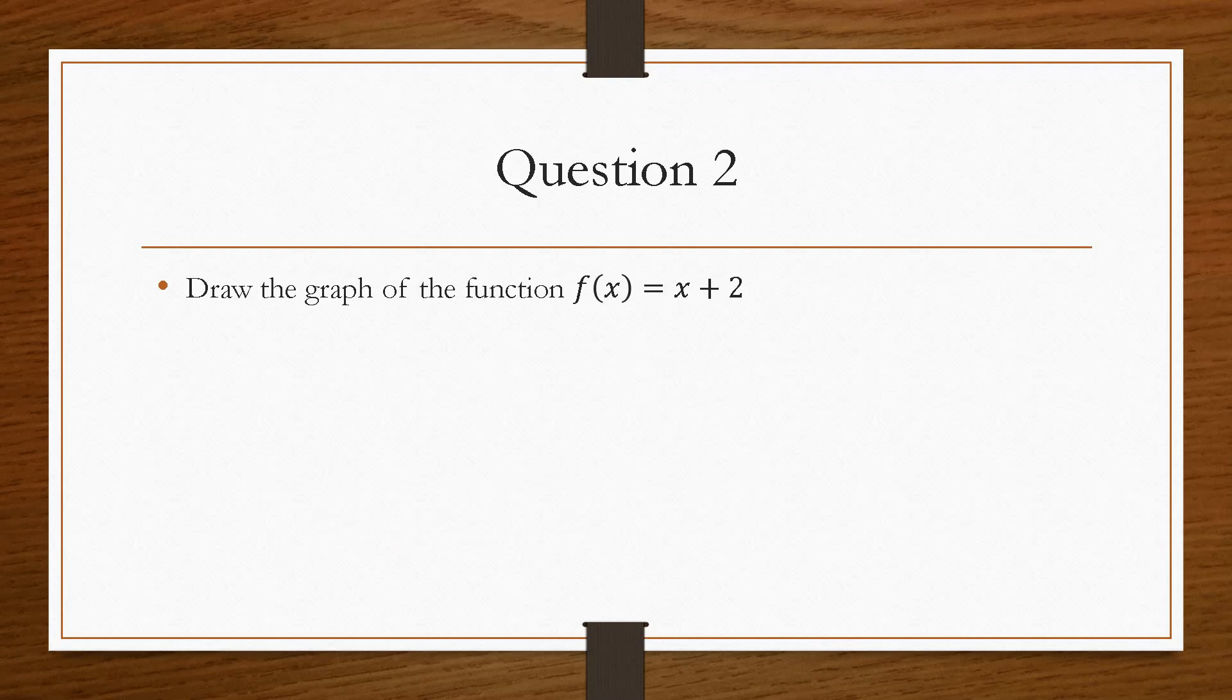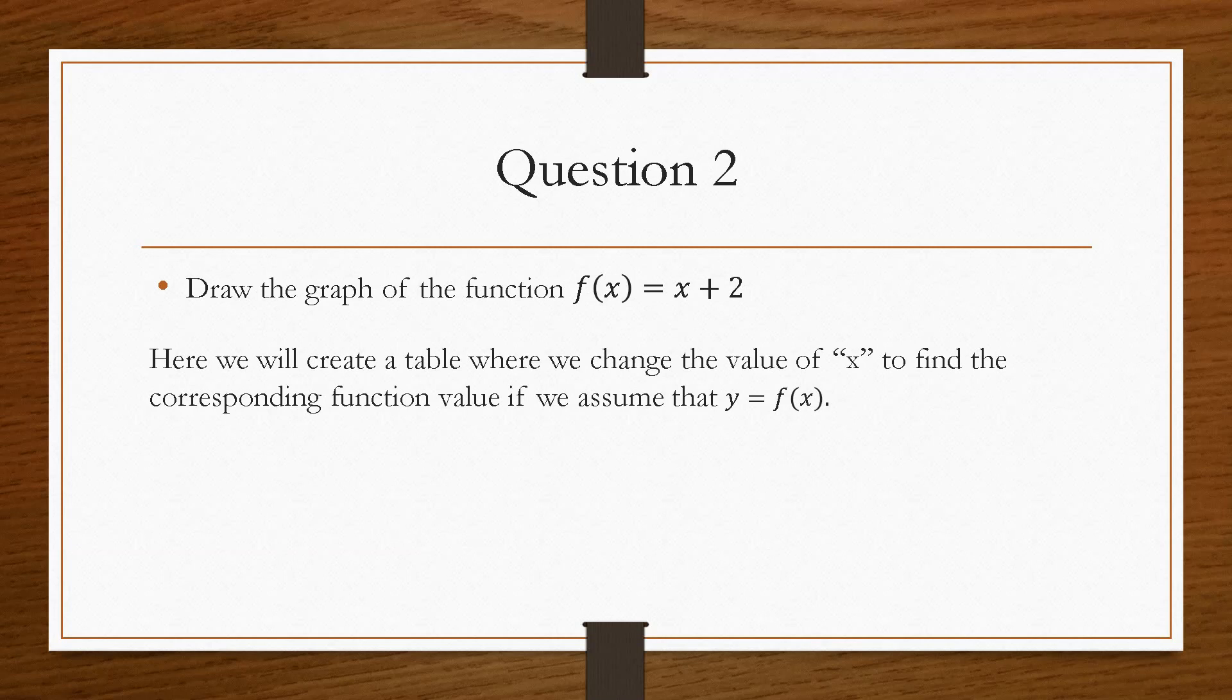And then question 2 asks us to draw the graph of the function f of x equals x plus 2. So what we can do here is create a table with a varying set of x values and the corresponding function value, which we will assume is y equals f of x, because really this is y equals mx plus c. So we'll just say that y equals f of x.